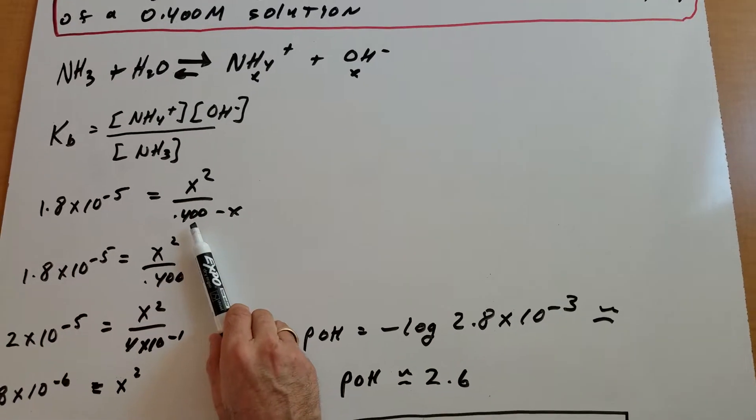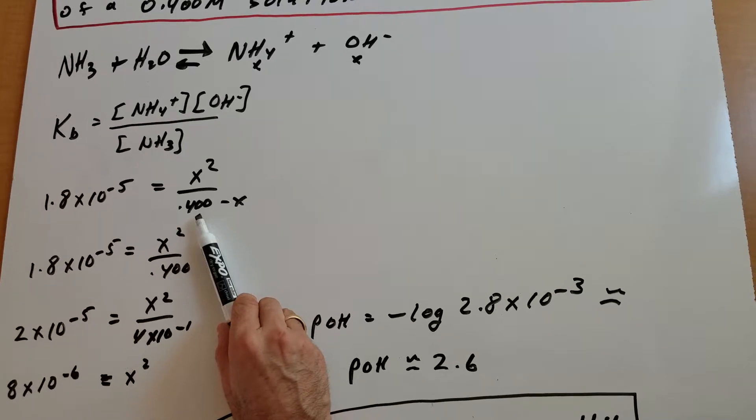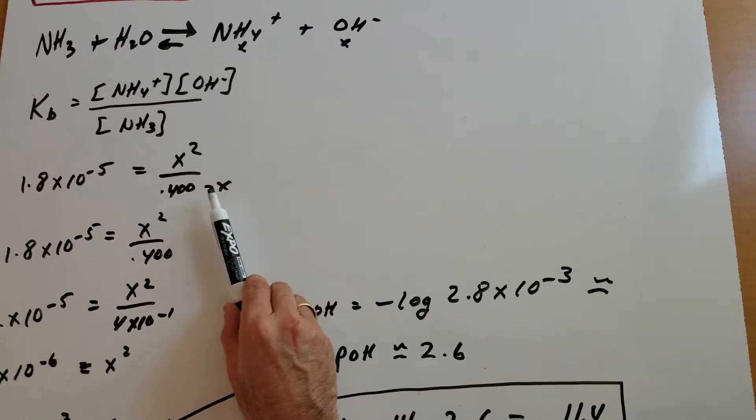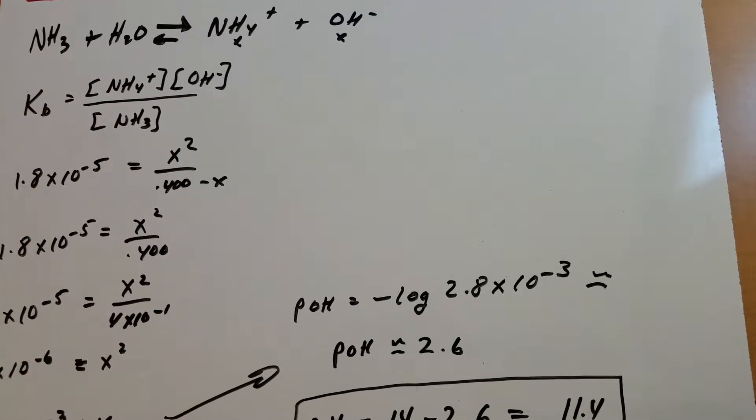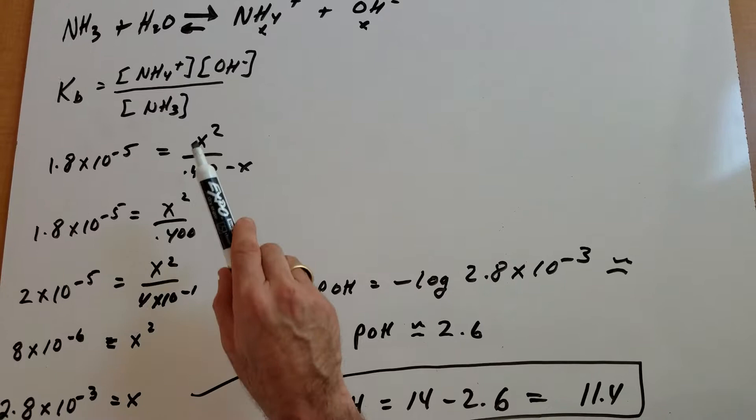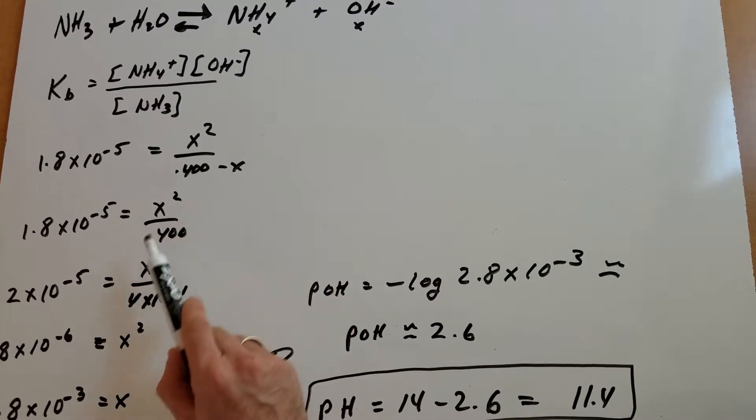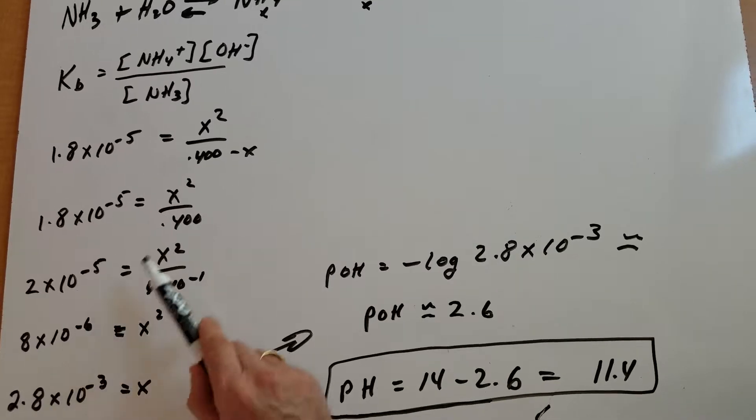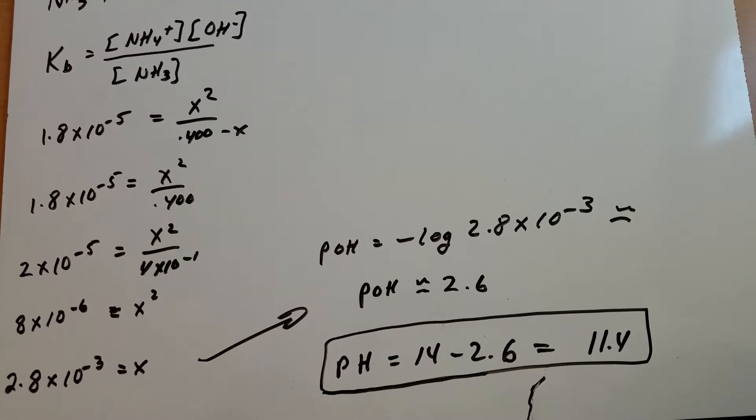At equilibrium, the concentration of ammonia is 0.400 minus x, because we lost some of the ammonia as you can see from the start. However, for the DAT exam, we're always going to make an assumption that this x is very small. So I can now say we have 1.8 times 10 to the minus 5 equals x squared over 0.400.